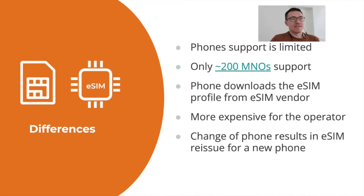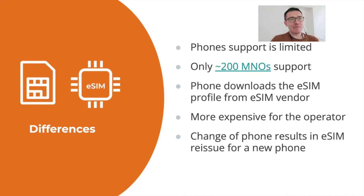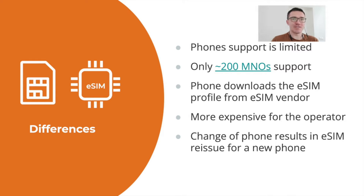Now let's talk about the differences. My colleagues like to ask me: what's the difference between a SIM card and an eSIM? Phone support is quite limited. And also, according to apple.com, only 200 mobile operators support eSIM worldwide. Is 200 a big number or a small number? If you Google it or read Wikipedia, you'll find that just in Europe there are more than 1,000 mobile operators. So comparing 200 mobile operators worldwide to just 1,000 in Europe makes me think that eSIM technology adoption is not yet really widespread.